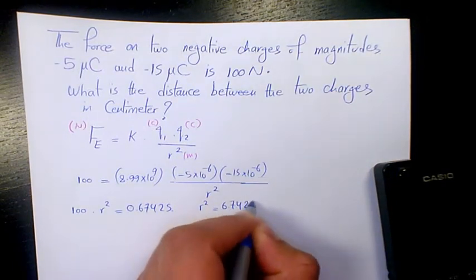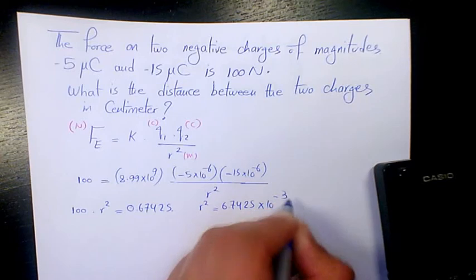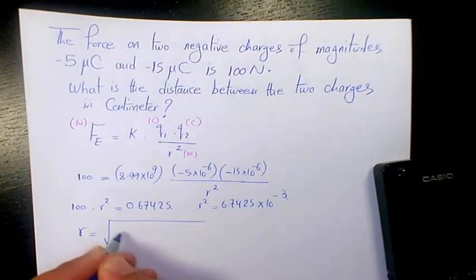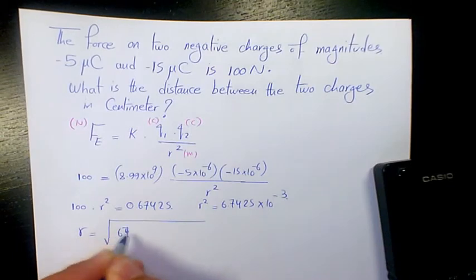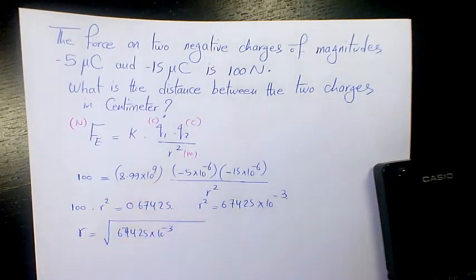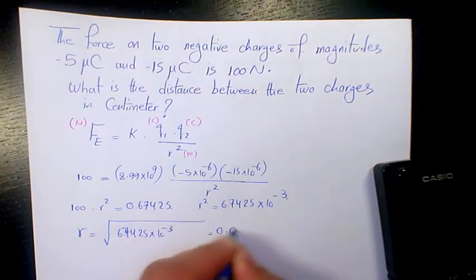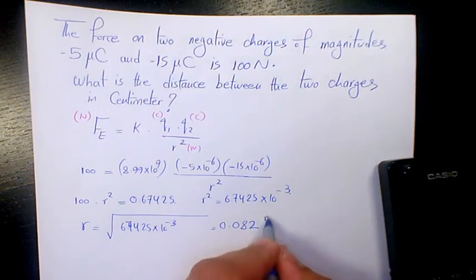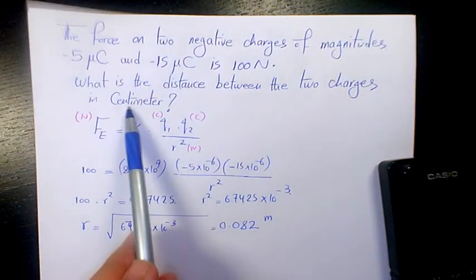R will be the square root of 6.7425 times 10 to the power of -3, which will be 0.082. That's going to be the distance in terms of meters.